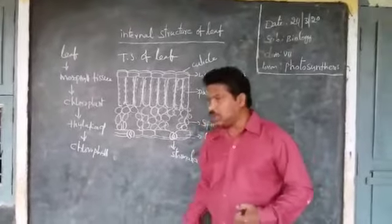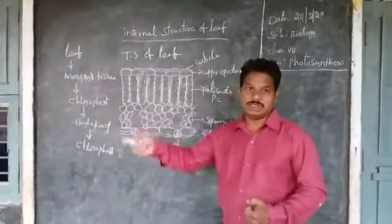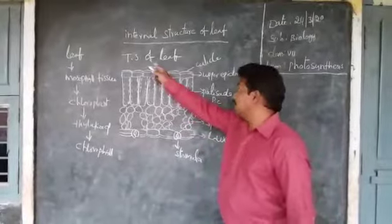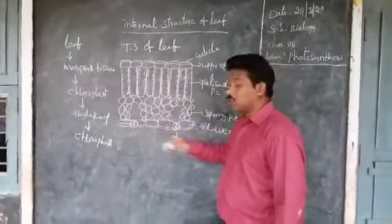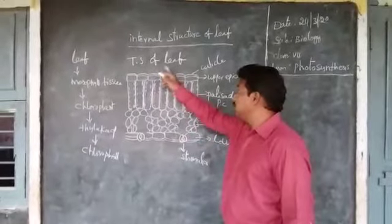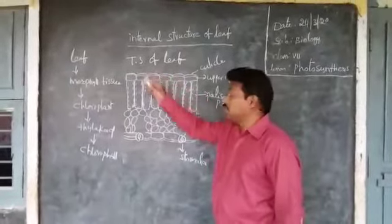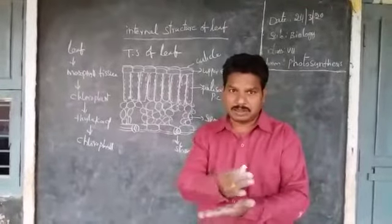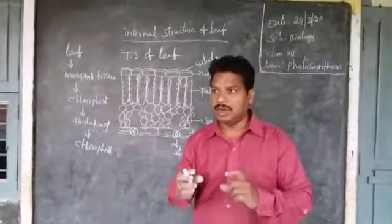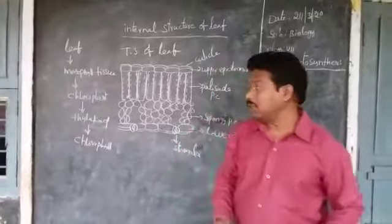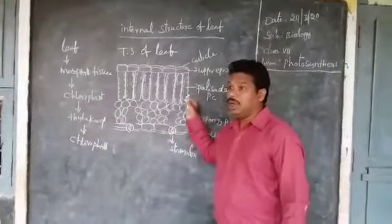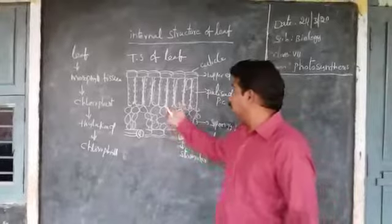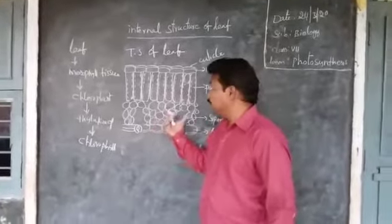So the leaf is suited for the conditions of photosynthesis. How it is suited? Let us see. Here, the TSF diagram is already drawn. TSF means transverse section of leaf. Transverse means we cut the leaf like this. And we observe that leaf inside the microscope. And through that microscope, this diagram will be seen here.